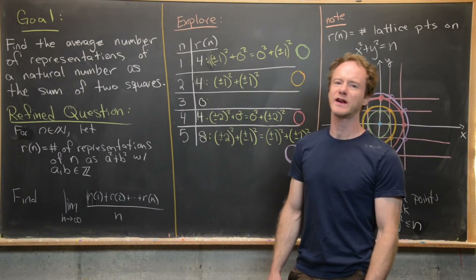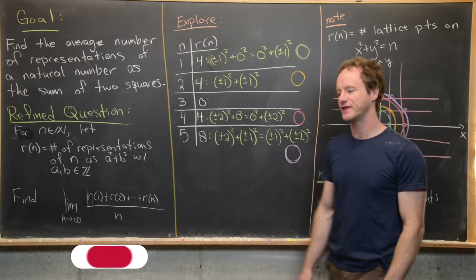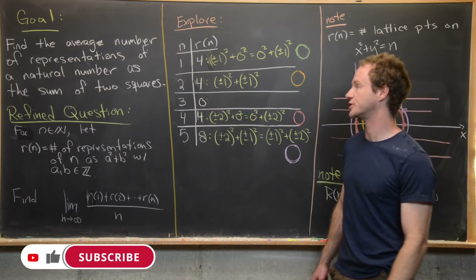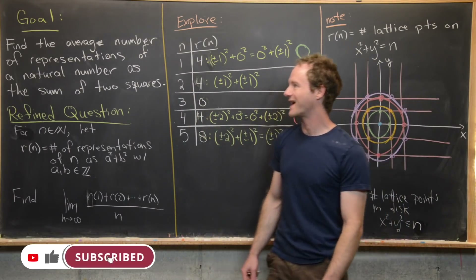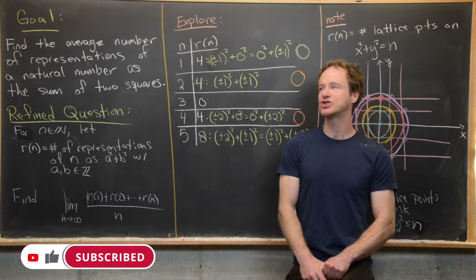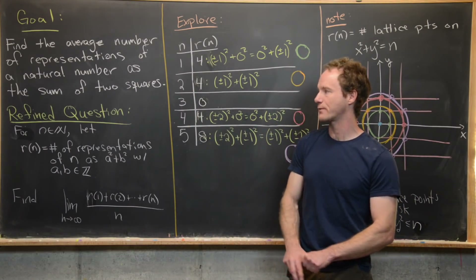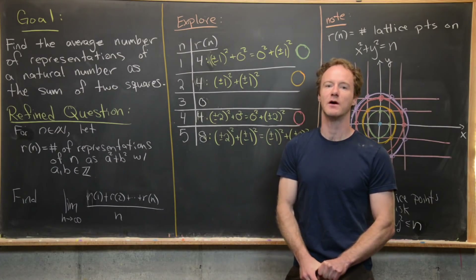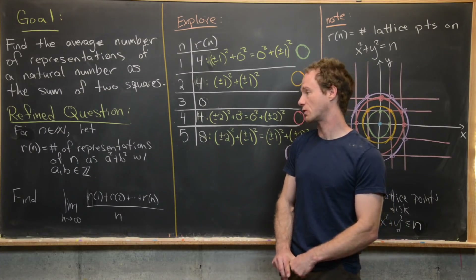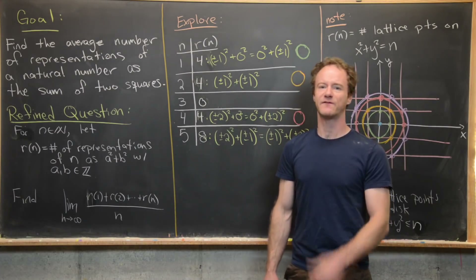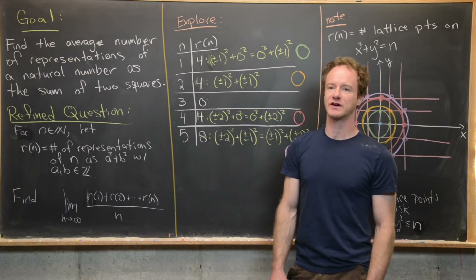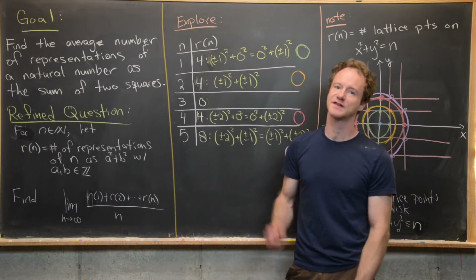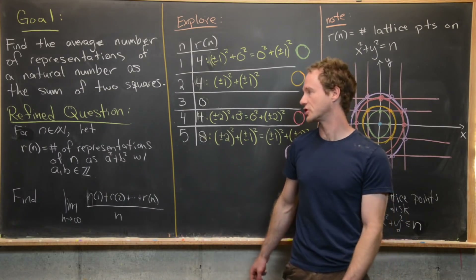Here we're going to explore a pretty interesting question that has a surprising solution. Our goal is to find the average number of representations of a natural number as the sum of two squares. Let's refine that question a little bit before we dive into some examples and then the solution.